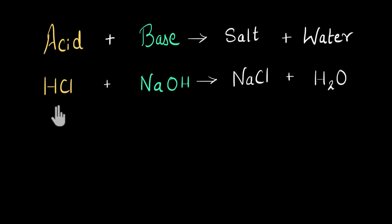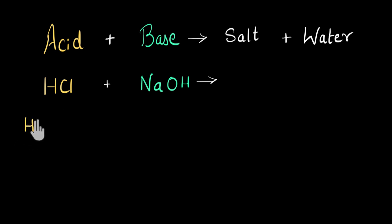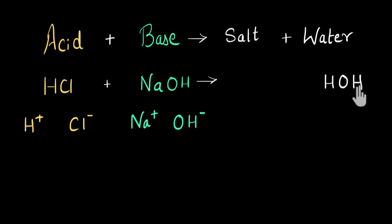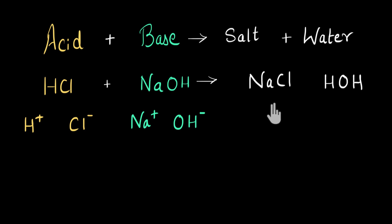First, let's recall how acids and bases react to give us salt and water. Here I've taken HCl acid and NaOH base. When I mix them in water, HCl dissociates to give H⁺ ion and Cl⁻ ion. Similarly, NaOH dissociates to give Na⁺ ion and OH⁻ ion. A double displacement reaction happens — the ions exchange position. H⁺ gets attracted to OH⁻ and forms water (H₂O). Sodium ion gets attracted to Cl⁻ and forms the salt NaCl. This is how we get salt and water as products.